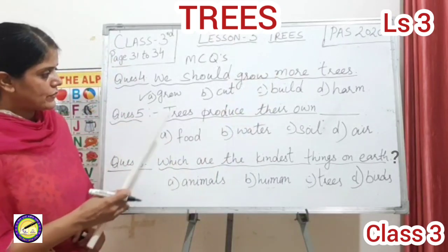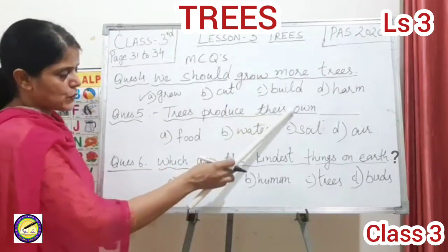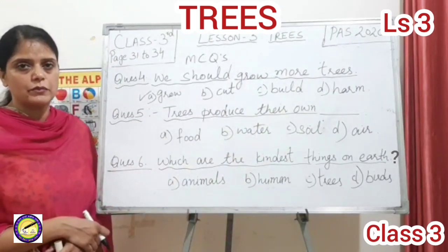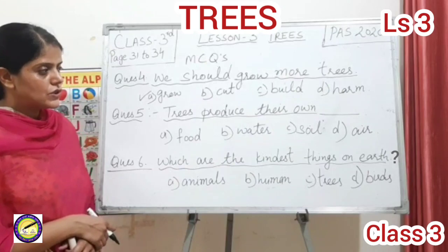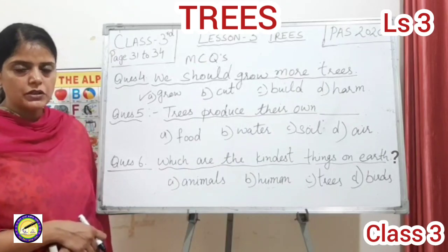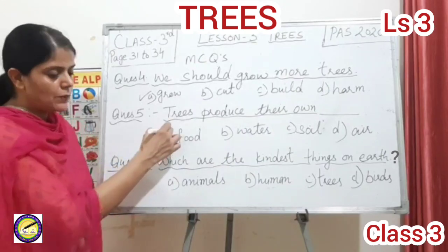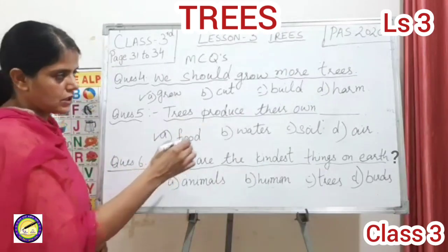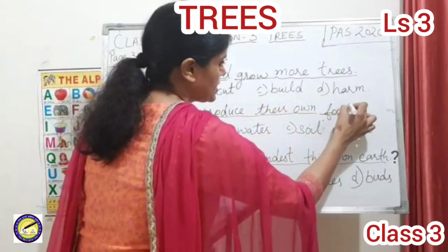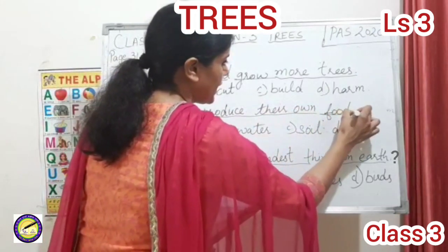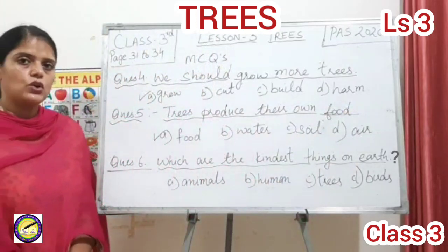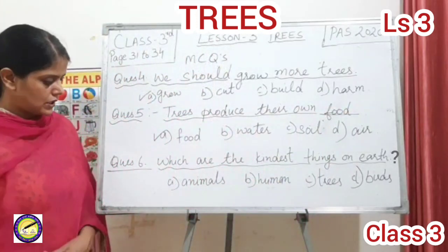Question number five: trees produce their own blank. Trees are producers, meaning they produce their own food themselves. That is why they are able to provide so many things to other creatures — because they make their own food.